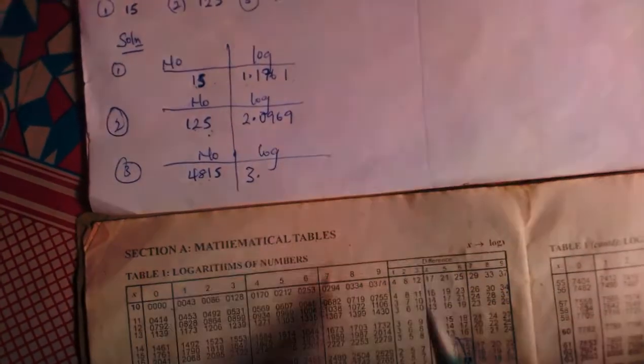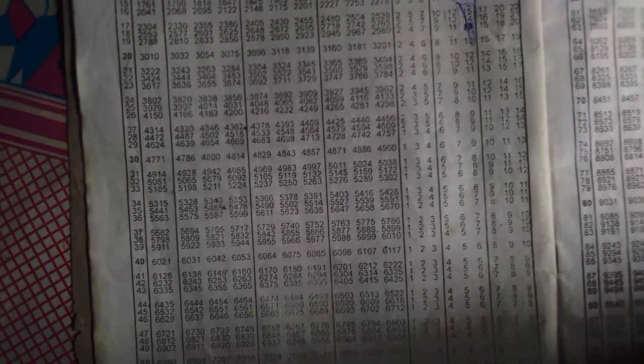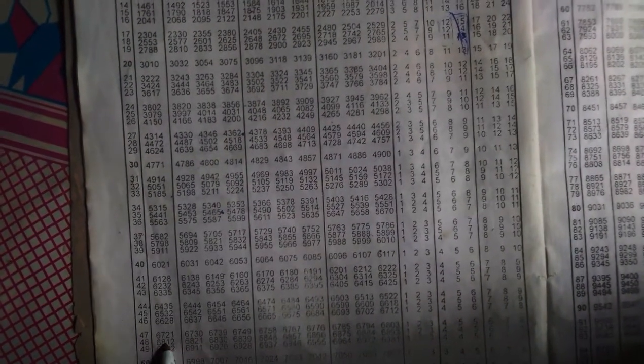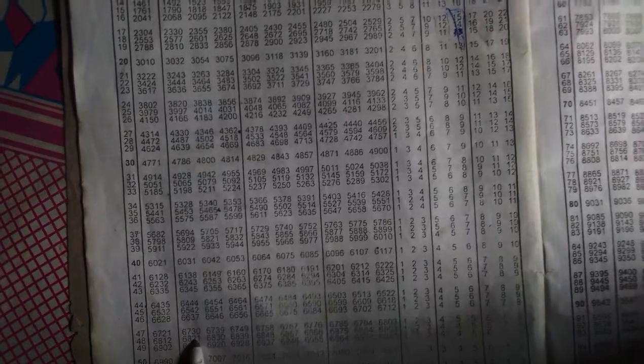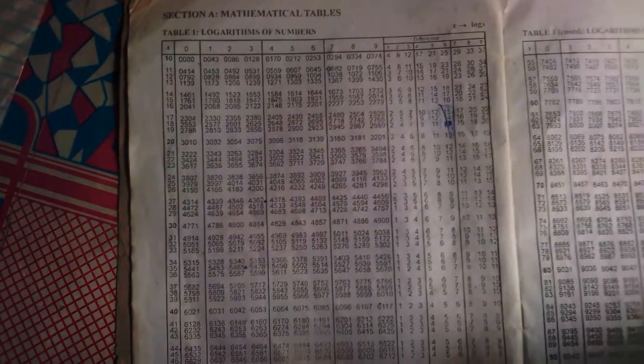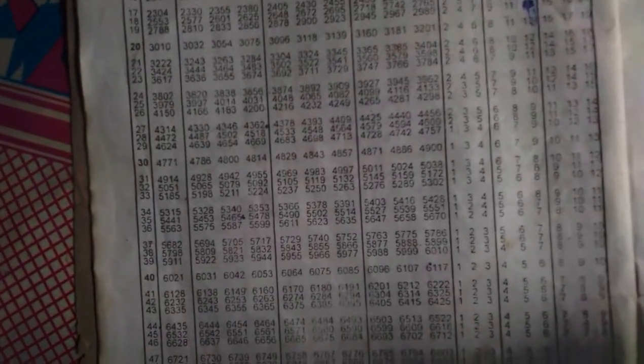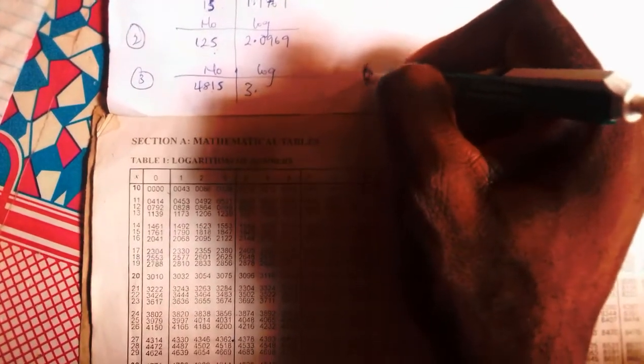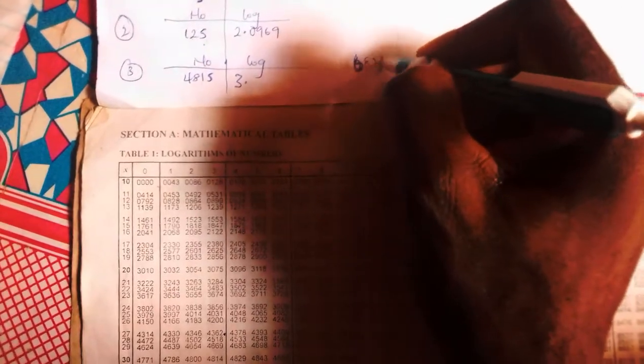48 under 1 is what? Let me check. 48 under 1, this is under 0, this is under 1. 48 under 1 is 6821. So let me write 6821 somewhere, because I am going to be adding the difference. 6821.